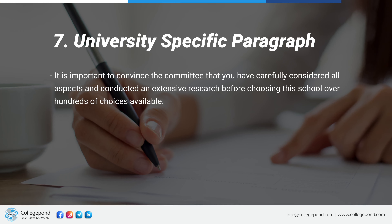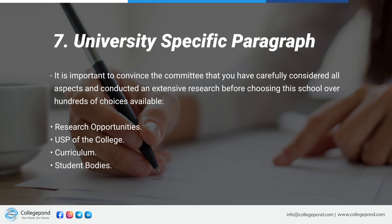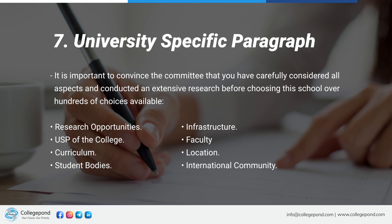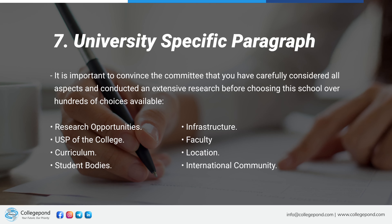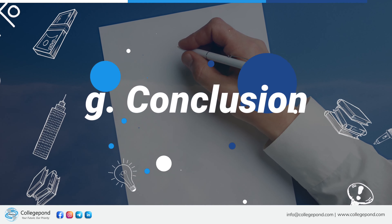When you write an SOP, you want to show genuine interest in that university, so spend time on it. Look at the research opportunities and the USP of the school. The things to highlight include the curriculum, student bodies you want to be part of, infrastructure, and faculty. This shows that you've spent time learning about the school, which is absolutely important.